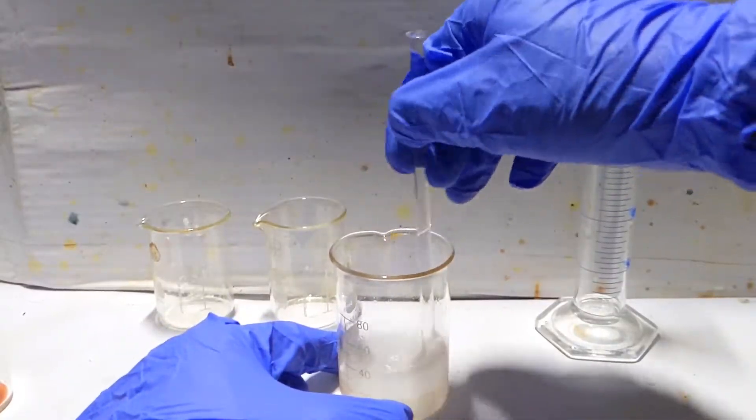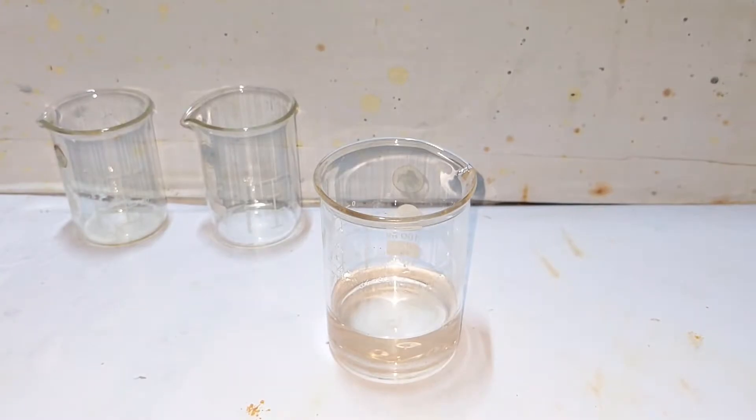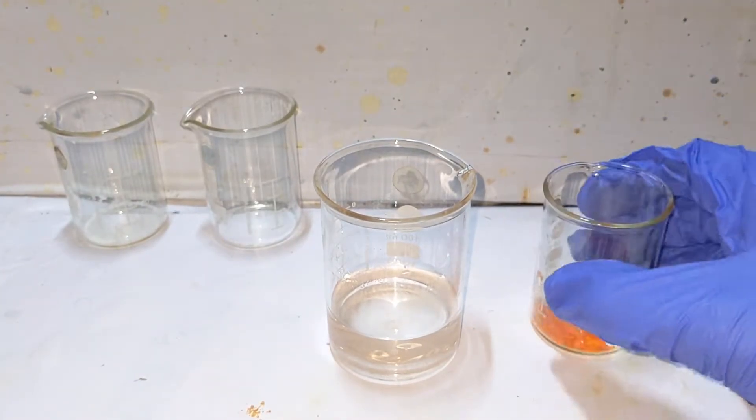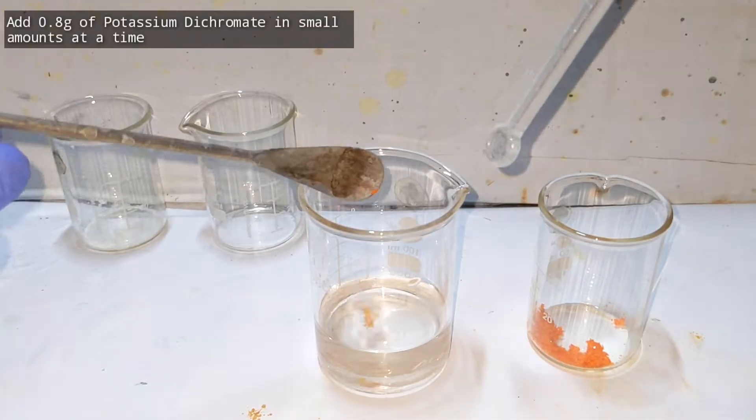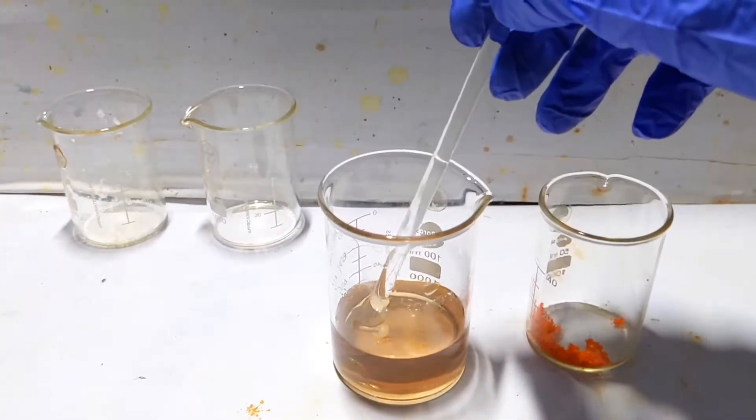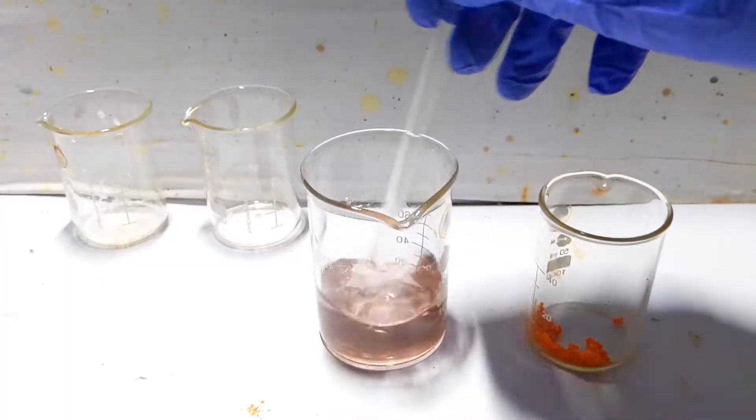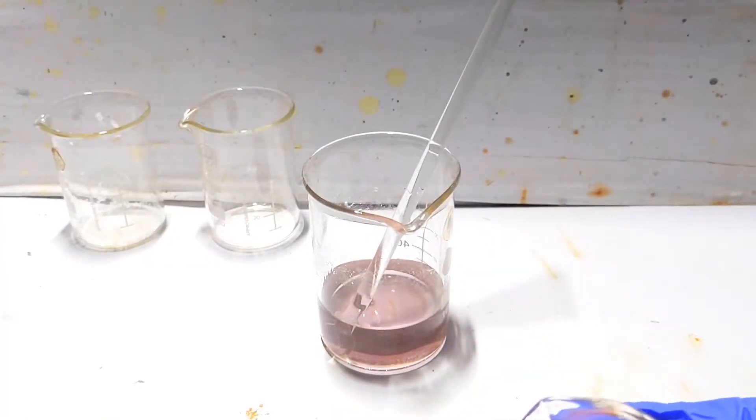Next, 0.85 grams of potassium dichromate was added in small lots with the help of a spatula. You can see how the orange color of the potassium dichromate immediately turns dark upon addition.